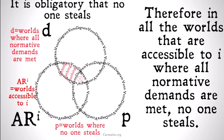Let's say it's obligatory that no one steals. P is then going to be all worlds where no one steals. So in all worlds that are accessible to I where all normative demands are met, no one, in fact, steals. That's the circle with the X in the center — it's the seriality rule we talked about earlier: there always has to be at least one world that's accessible.